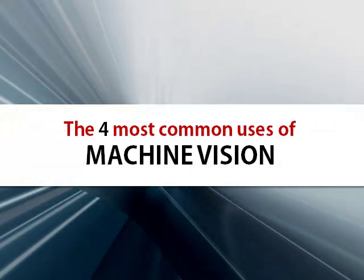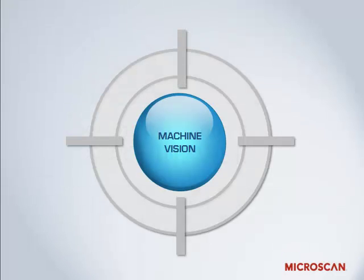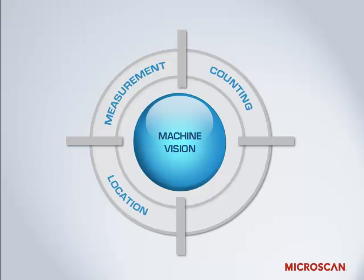Let's talk about some of the most common applications of machine vision. As it has developed, machine vision's applications have grown into four basic functions: measurement, counting, location, and decoding.